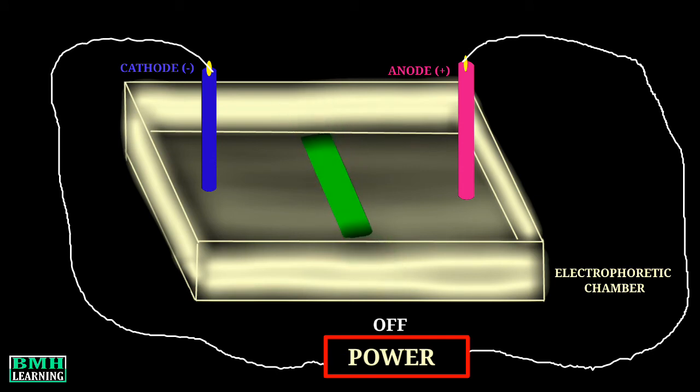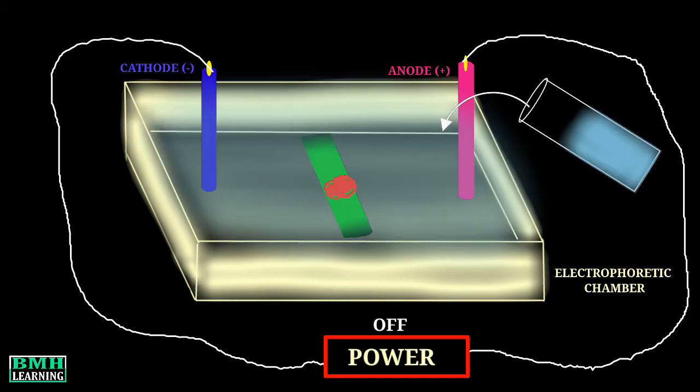Next, we place our sample to be separated on this medium. After this, the electrophoretic buffer is added through which electric field will travel, and then we switch on the power so the current will move.